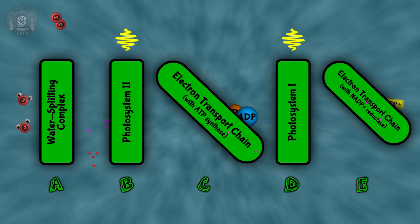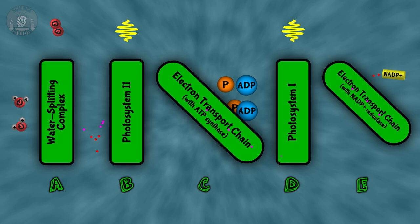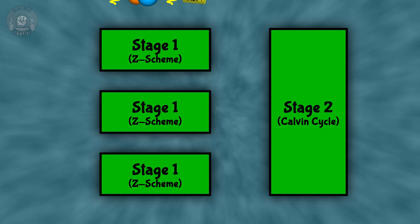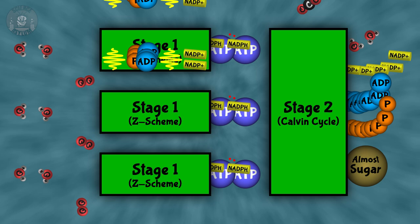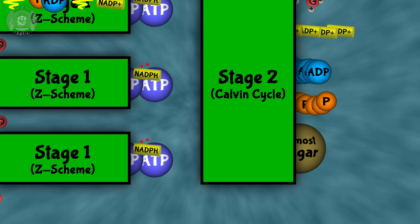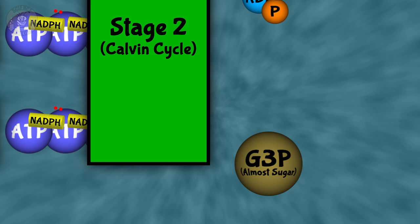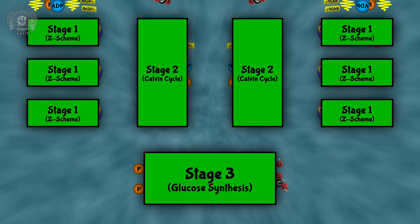This is what stage 1 looks like overall. For simplicity, we're only showing the molecules that get moved around. For stage 2 to actually work properly, we need three of these stage 1s running simultaneously — that's the only way to give stage 2 all the energy and ions it needs. And that's where the carbon dioxide comes in. Stage 2 happens in the main space of those green packets inside the cell. Three carbon dioxide molecules come in along with a bunch of energy and charge from stage 1. Through a process called the Calvin cycle, those molecules are turned into G3P — that's the sugar precursor we talked about earlier, which will be made into glucose in stage 3.